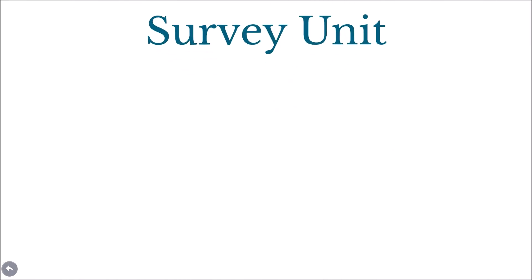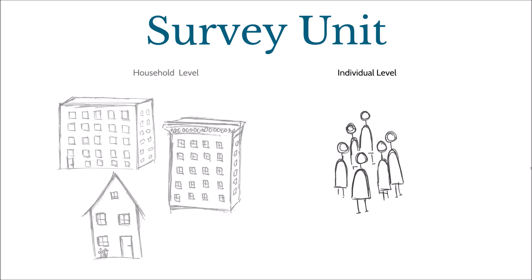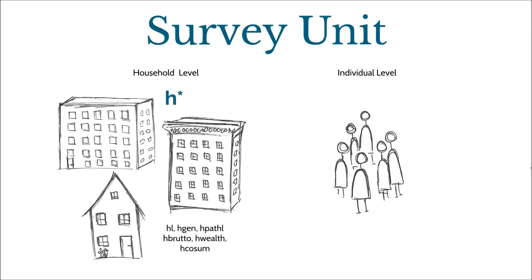SAP data can be distinguished by the survey unit. As the SAP is a household panel study that also provides information on every individual living in the sampled households, some datasets contain information at the individual level, while others contain information at the household level. Datasets containing household-level information are frequently indicated by a leading H. Datasets providing information on individuals are frequently, but not always, indicated by a leading P.